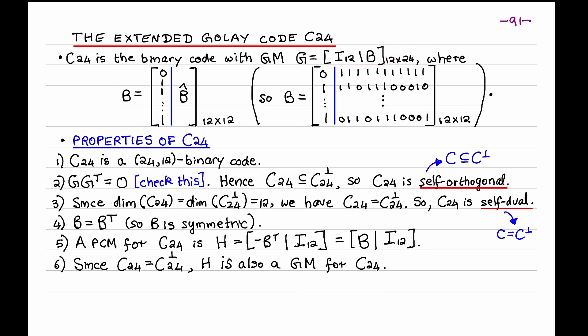As we noted, C24 is a self-dual code. And so a PCM for C24 is also a GM for C24. Because recall that a PCM for C24 is a GM for the dual code of C24, which equals C24. So we have the nice property that the matrix G and the matrix you get by swapping the two halves of G are both generator matrices and parity check matrices for the extended Golay code C24.